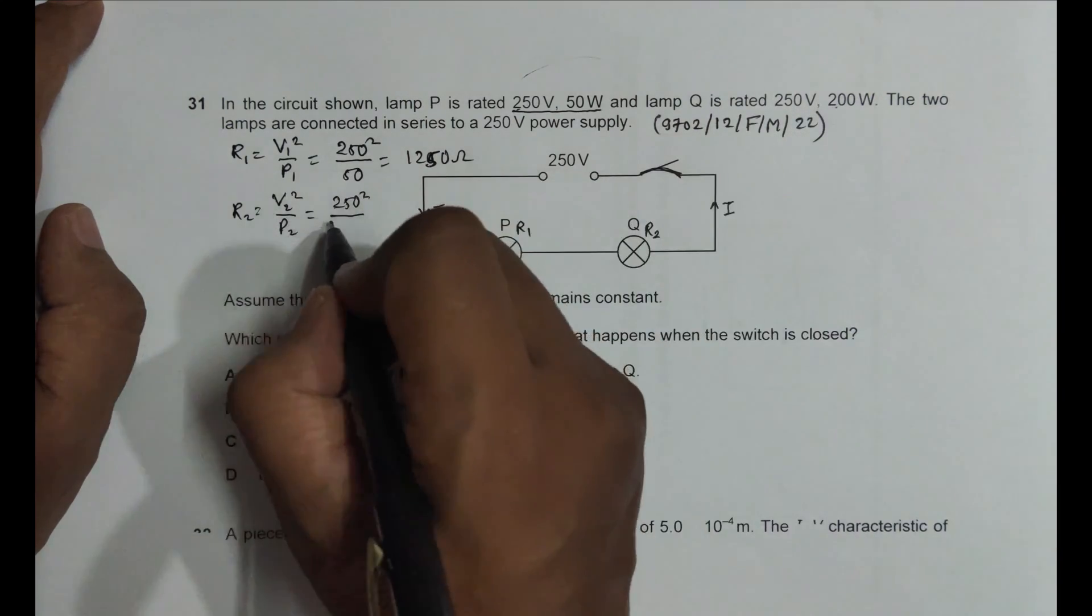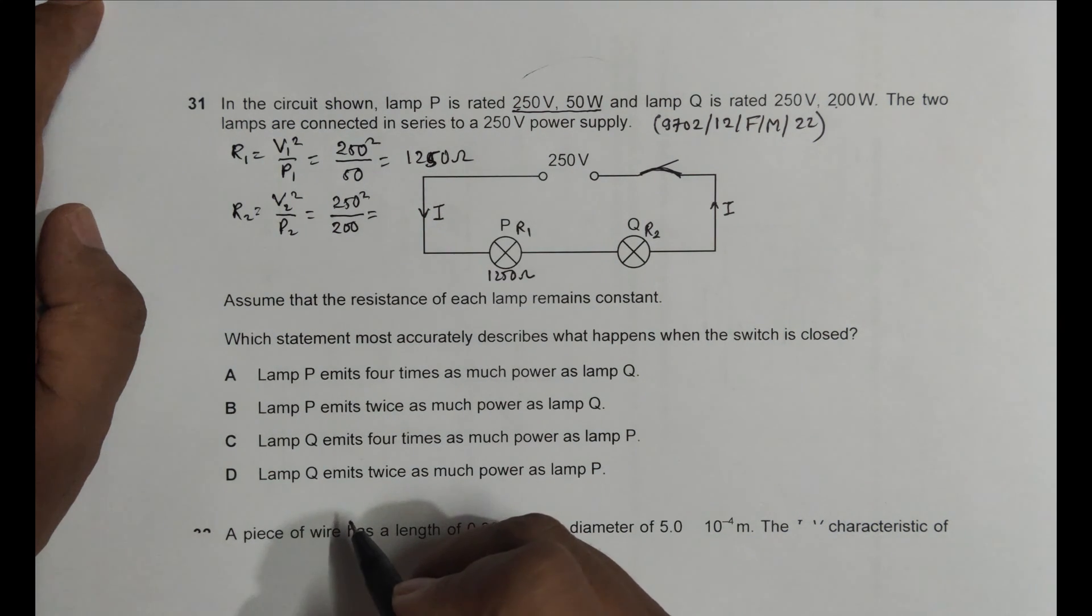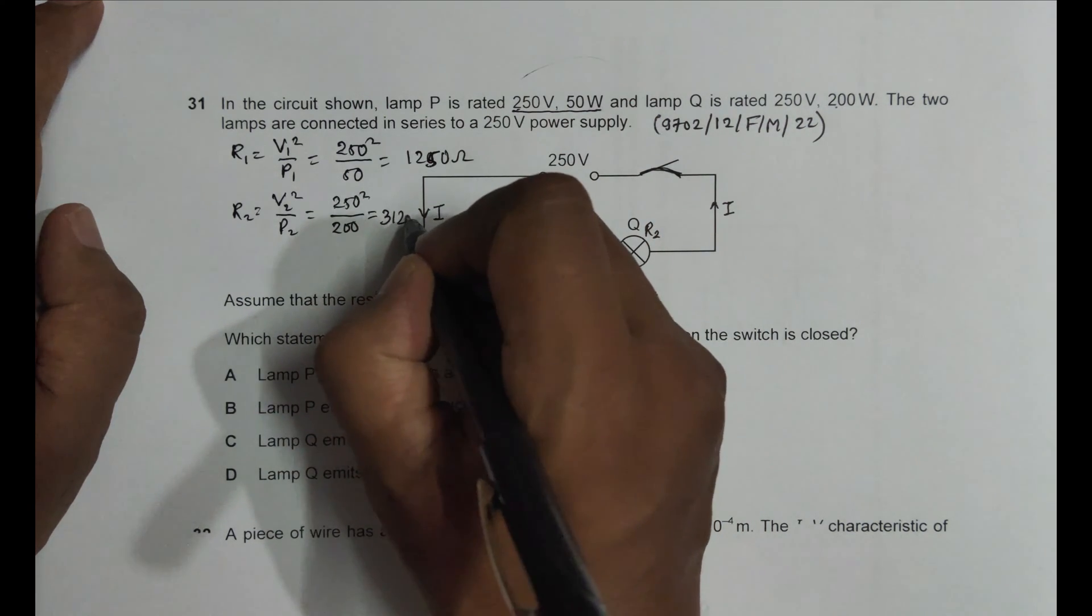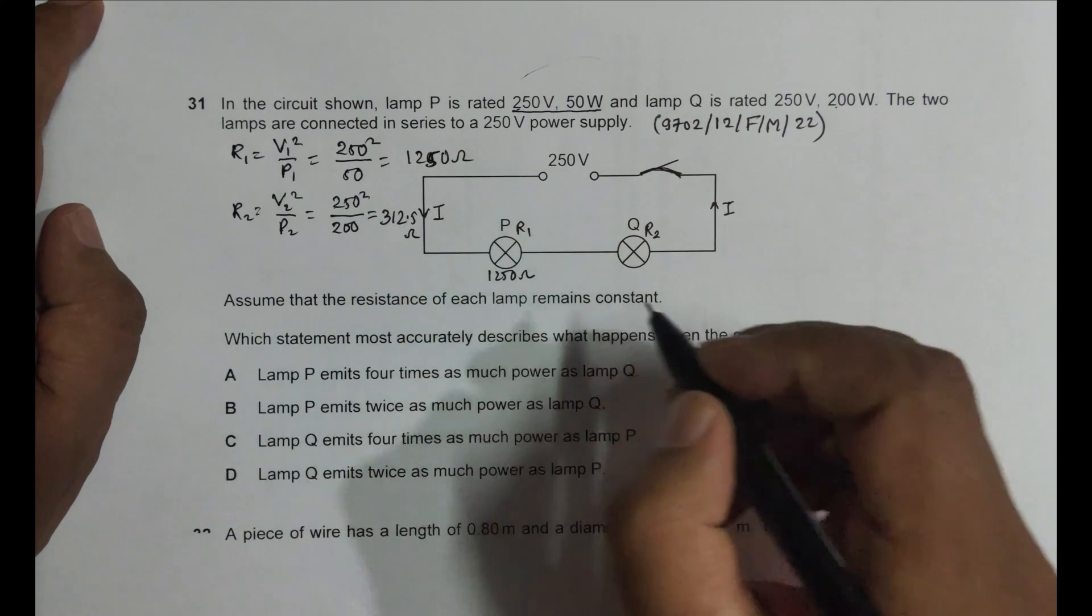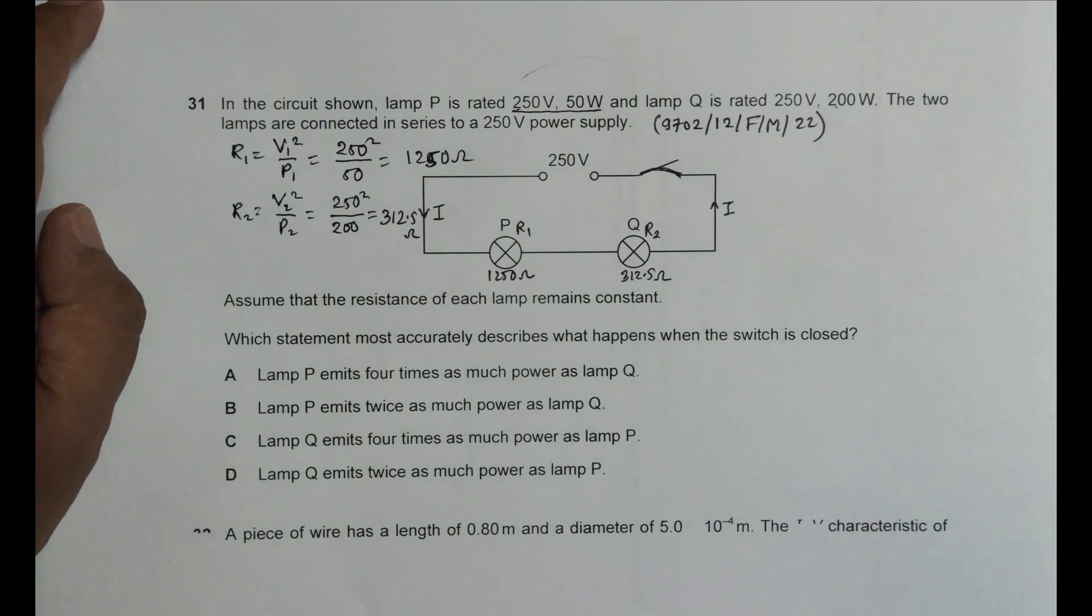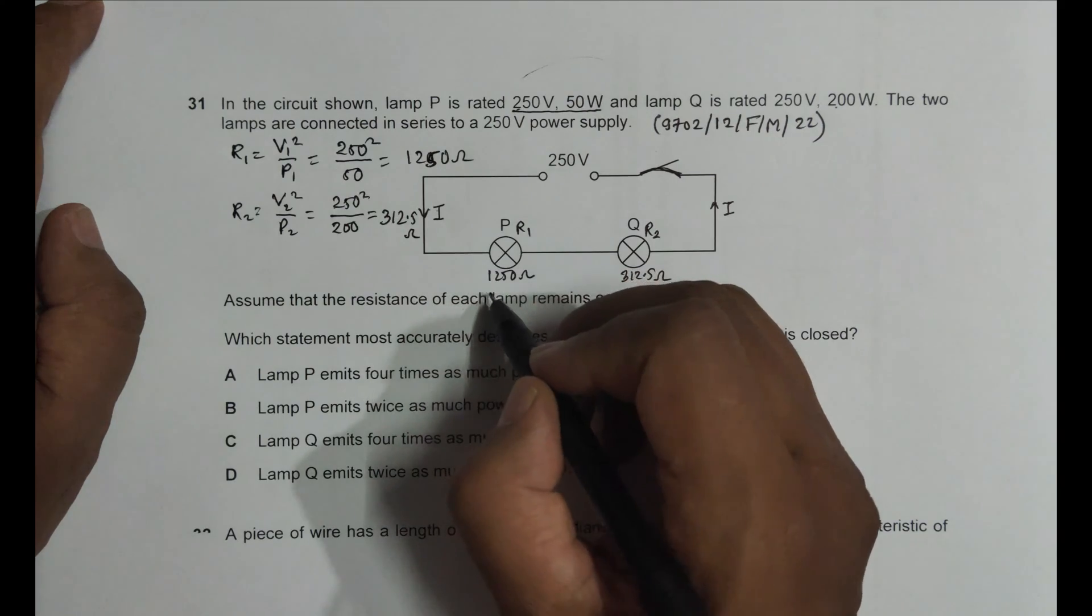That's equal to V2 squared, which is 250 squared, and P2 is given as 200. So it's equal to 312.5 ohm. So its resistance is 312.5 ohm.